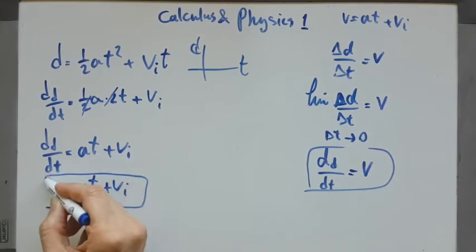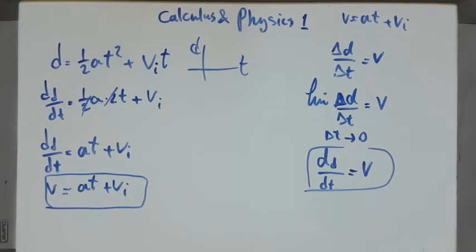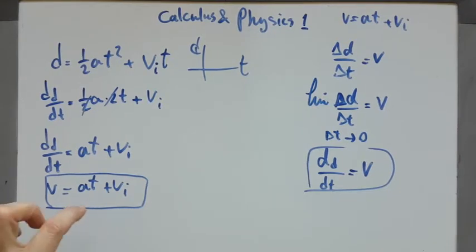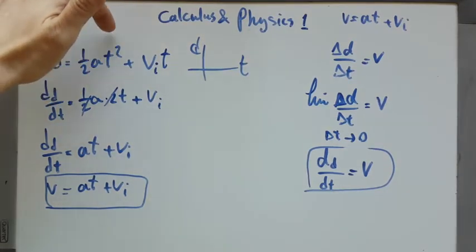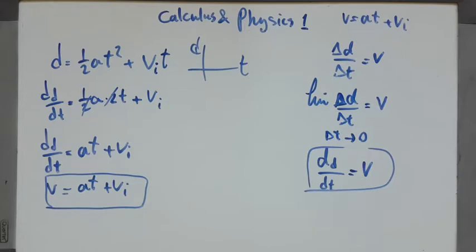You learned to derive this formula from simple algebra, but now you learn how to derive it using calculus. This is better because for situations when your acceleration is not constant and you have a more complicated formula — for example, when the power of T is bigger — you can always find the formula for velocity.